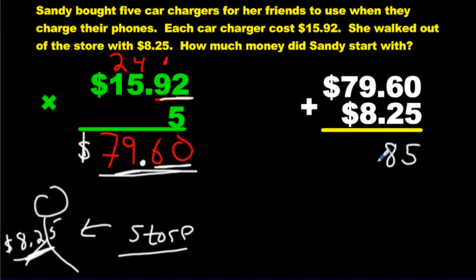So we're going to get five plus zero, six plus two, put the decimal, nine and eight is 17, carry the one, and then you get eight over here. So she had $87.85 when she walked into the store.